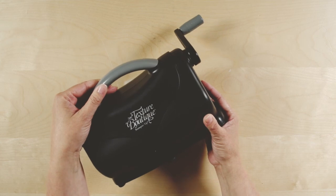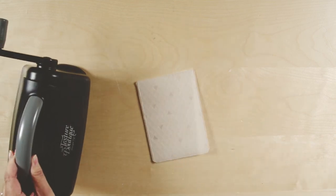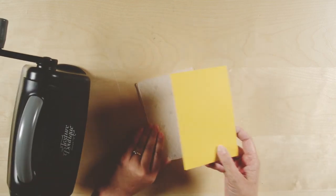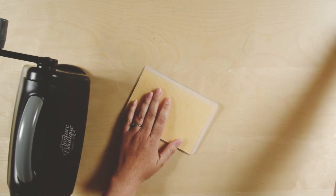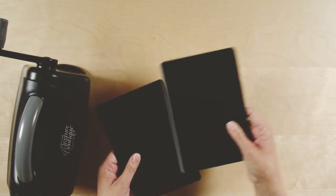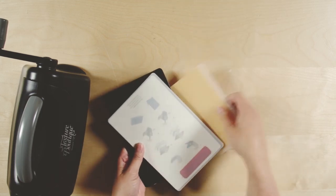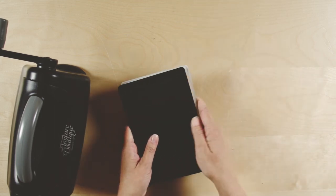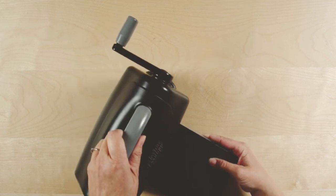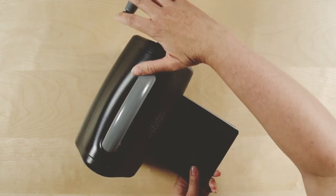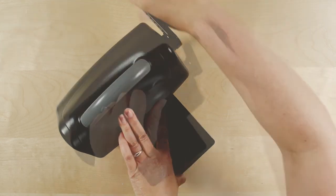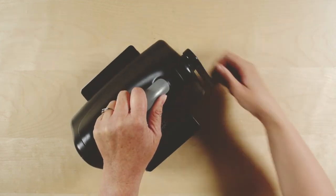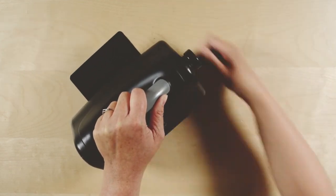I've got my Texture Boutique here and a piece of crushed curry that I'm going to put inside the embossing folder. I've got my pads here, so I'm going to create my sandwich and put that into the Texture Boutique. Give it a little push to get started. Turn that handle to send the sandwich through.